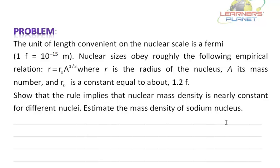It is given that nuclear sizes obey roughly the following empirical relation: r is equal to r0 A to the power 1 by 3, where r is the radius of the nucleus, A is its mass number, and r0 is a constant equal to about 1.2 Fermi.